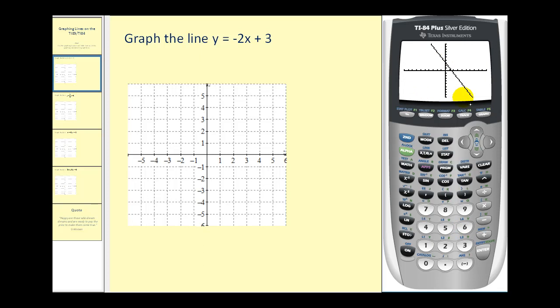And now you should see the line graphed on the screen. If we do press the window key, you'll notice both the x minimum and y minimum are negative ten, and the x max and the y max are also positive ten. Now let's go ahead and press graph again.